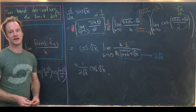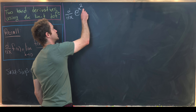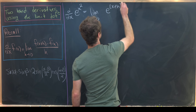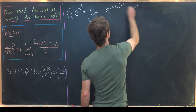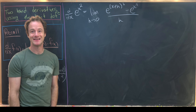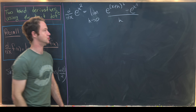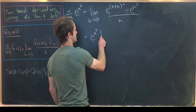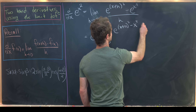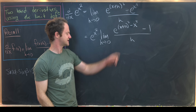For the last example we compute the derivative of e^(x²) using the limit definition. So we need the limit as h→0 of [e^((x+h)²) − e^(x²)] / h. Since we expect an e^(x²) factor in the answer, we factor it out of the numerator, giving e^(x²) times the limit as h→0 of [e^((x+h)²−x²) − 1] / h.